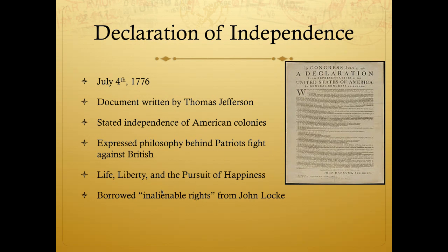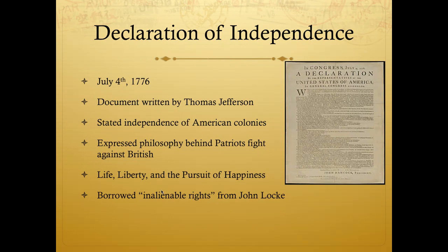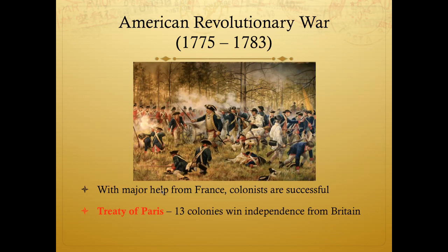On July 4th, 1776, Thomas Jefferson — a 33-year-old Virginia lawyer who would become our third president — writes the Declaration of Independence, stating independence of the American colonies. Many things in this document are taken directly from Enlightenment philosophes: 'We are endowed by our Creator with certain inalienable rights like life, liberty, and the pursuit of happiness.' That line is taken directly from John Locke, who said life, liberty, and the pursuit of property. This is the start of revolution season. Note: the war actually started in April 1775 with Lexington and Concord, but independence wasn't declared until the following year.